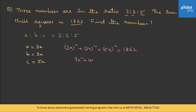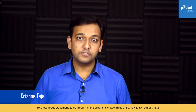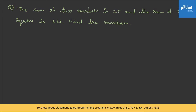That gives 38x² = 1862, so x² = 49, and x = 7. But this is not the final answer — they're asking for the numbers. Substituting x = 7: a = 21, b = 14, and c = 35. Let's do a few more questions from this topic: the sum of two numbers is 15 and the sum of their squares is 113.